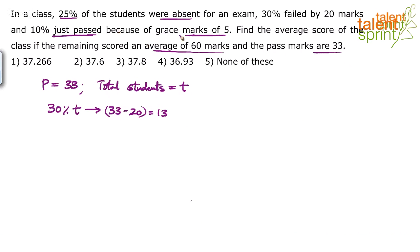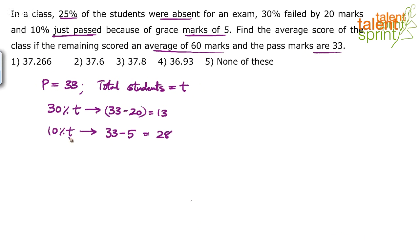10% just passed because of grace marks of 5. These 10% of students have just passed, meaning they have been given 33 marks, but they did not actually score 33 — they were given 5 grace marks. So how many marks did they score? 33 minus 5, which is equal to 28 marks. These 10% of the students scored 28 marks, and with 5 grace marks added, 28 plus 5 equals 33, so they just passed.